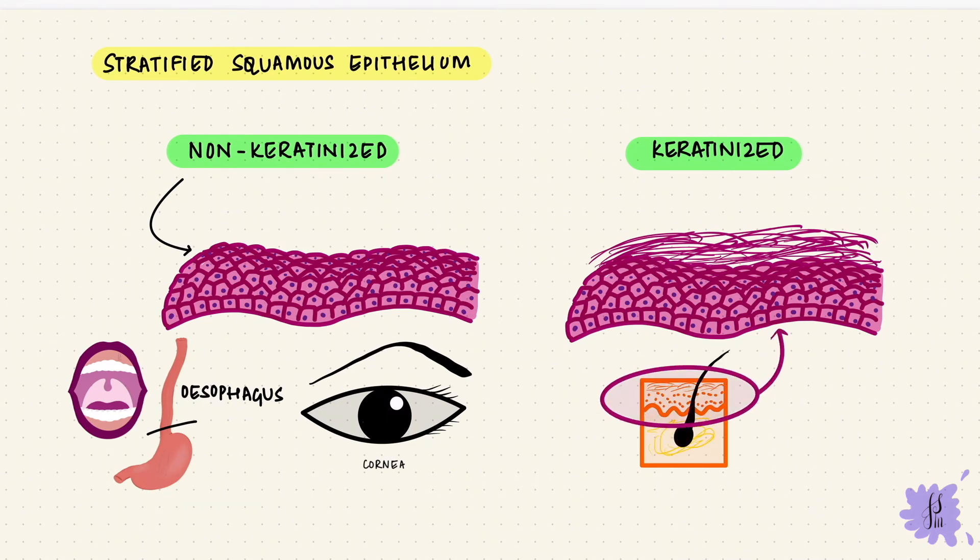What does this kind of epithelium do? It's protective. So you just have to think of the skin. The cells, they keep getting replaced. So there's a lot of mitosis that happens here.